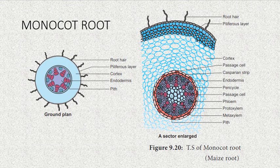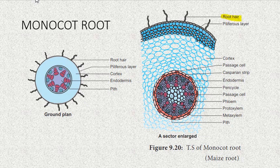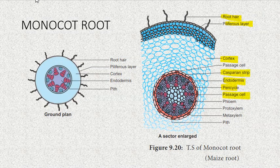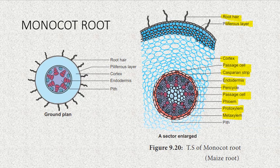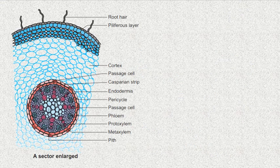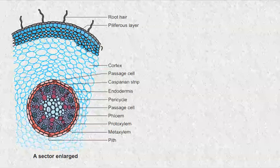Similarly, we have monocot root. When it comes to monocot root, no drastically different structure is seen — all structures are same: root hair, then piliferous layer, followed by cortex, endodermis, pericycle, Casparian strip, passage cell, phloem, proto xylem, and metaxylem. The type of structures does not change, but there is one important point about cortex in monocot root to remember.